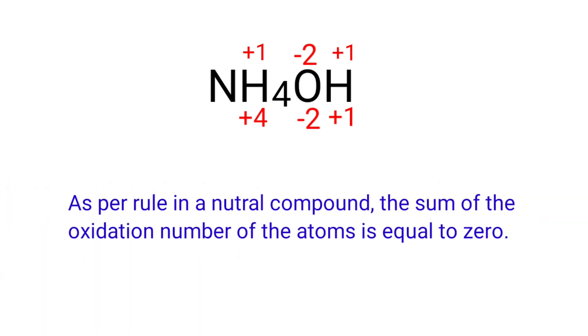As per the rule for neutral compounds, the sum of oxidation numbers equals zero. So the numbers along the bottom must add up to zero, which means the number under N must be -3.